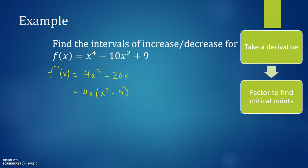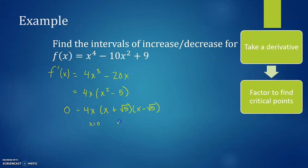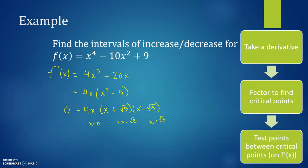There's a difference of two squares, so we get 4x times (x + √5)(x − √5). That's one way to do that factoring. Looking at the zeros, there's no place where this is undefined, but it equals 0 when x = 0, when x = −√5, and when x = √5. Then we want to test our points between those critical values and look at F prime on a number line.